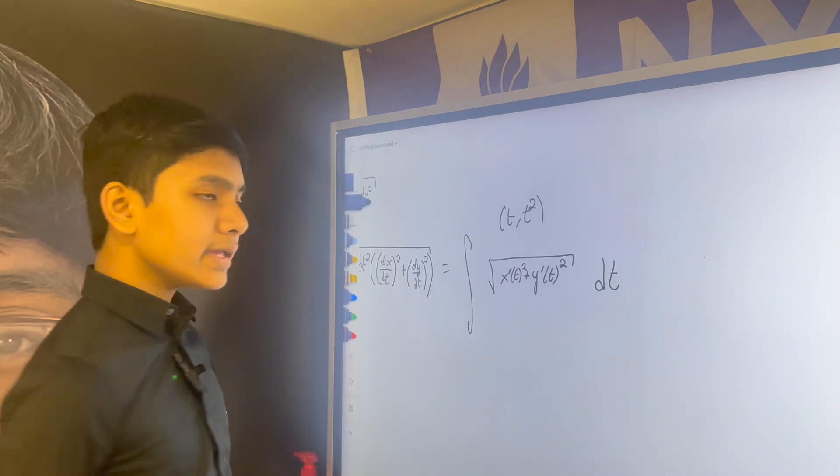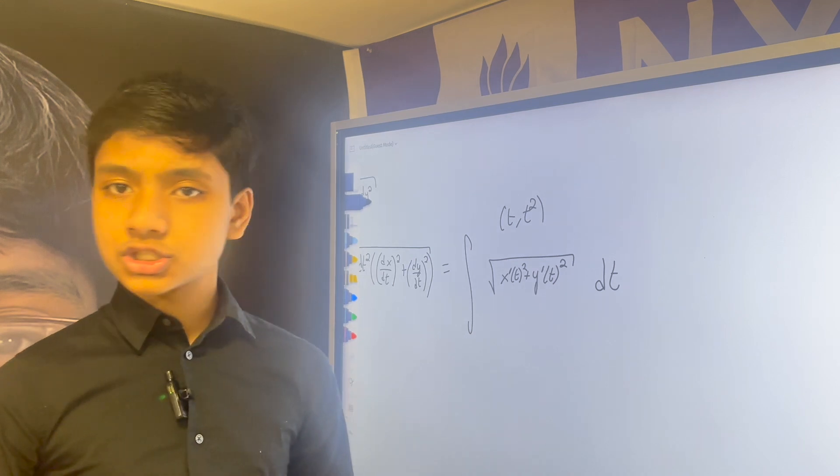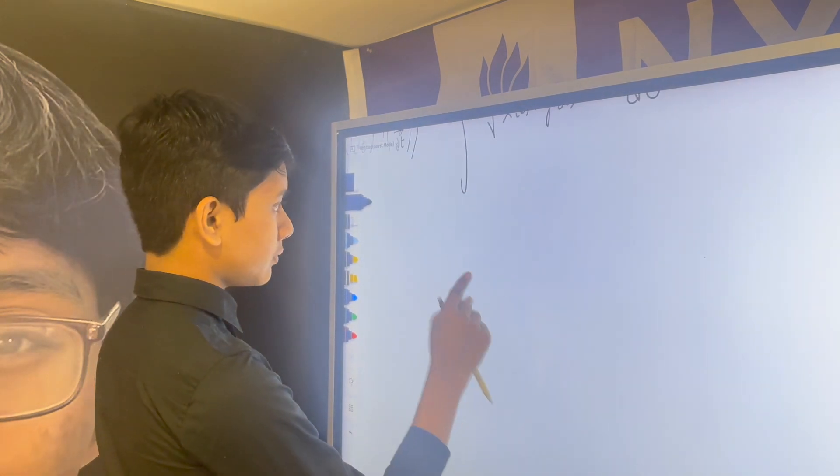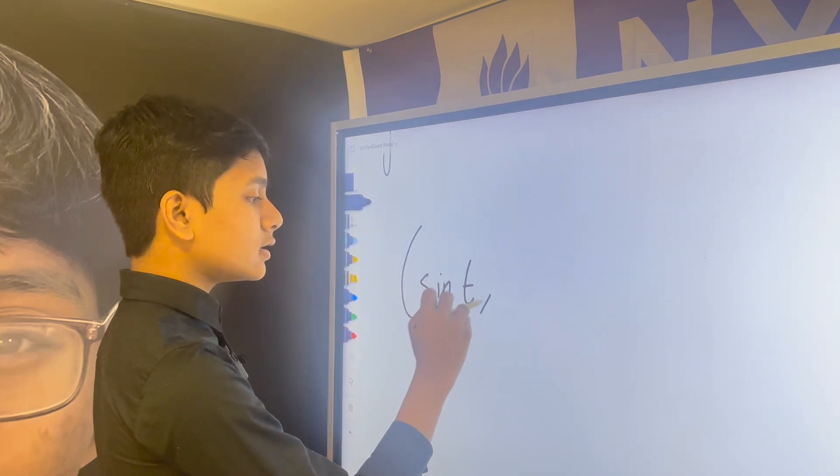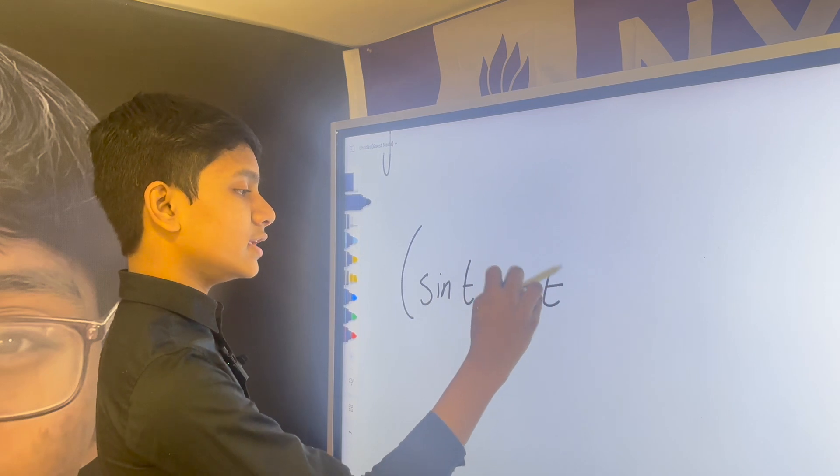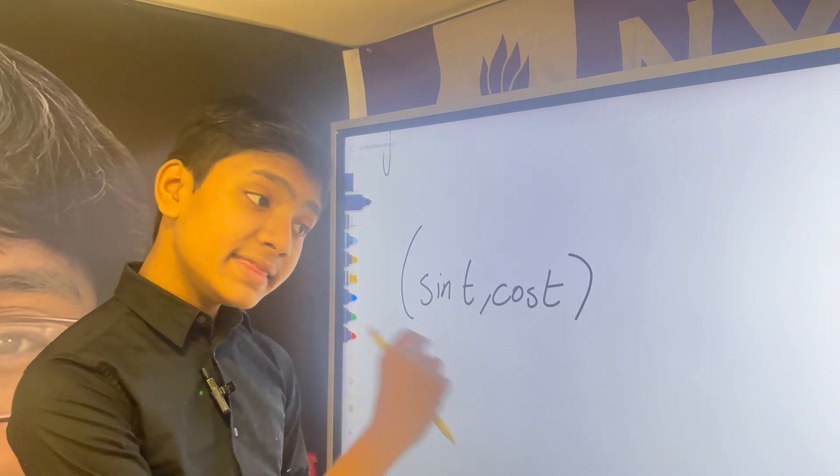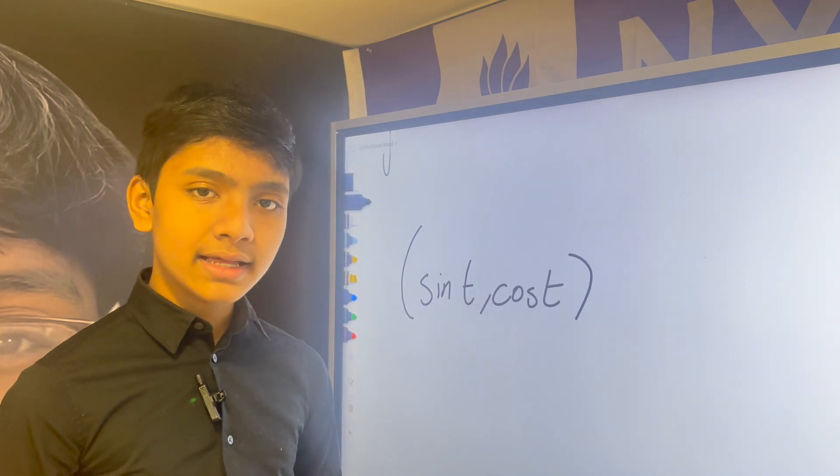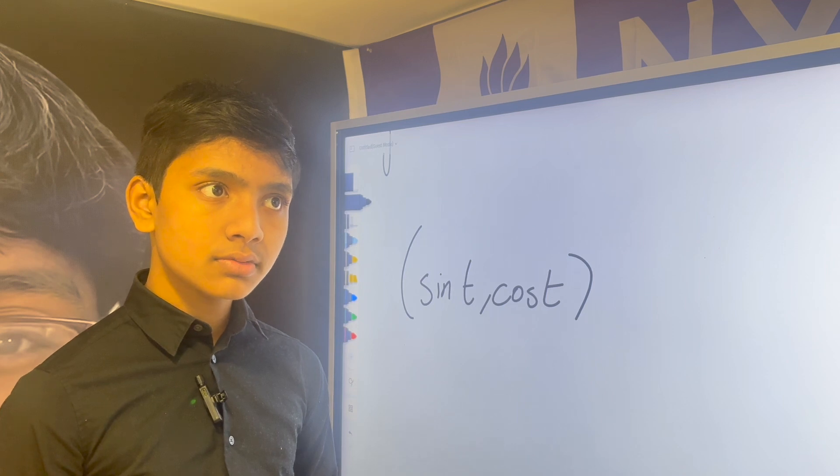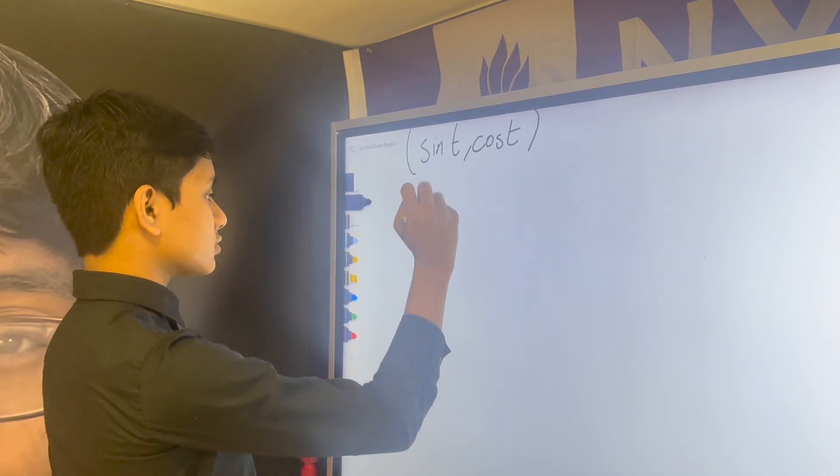So, let's try it on an example where we already know the arc length for sure. So, for example, sine of t comma cosine of t. Now, it should be pretty obvious to you that this draws a circle. What you might not realize is that, just make sure what I'm saying is correct. Yeah, what you might not realize is that this is the circle that it draws.